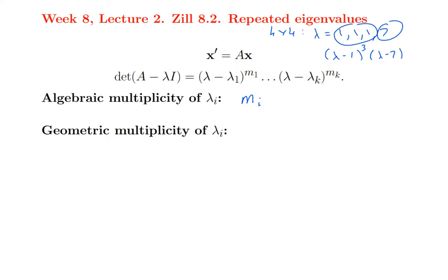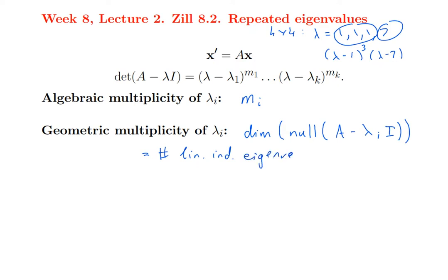The geometric multiplicity of an eigenvalue is something else and it may be a different number. It is the dimension of the null space of A minus lambda_i I. Remember how to find the eigenvectors: you write down A minus lambda I and find the null space of that matrix. In the examples we've done so far that was one-dimensional — there was just one eigenvector. The number of linearly independent eigenvectors that go with that eigenvalue is the dimension of the null space, and that is called the geometric multiplicity.